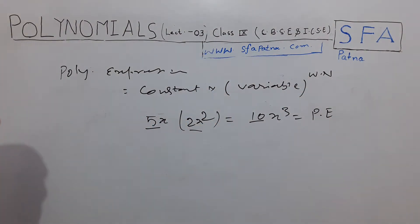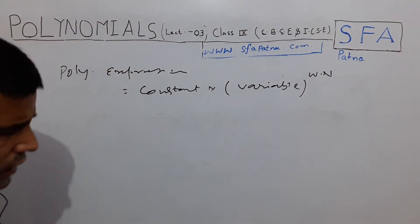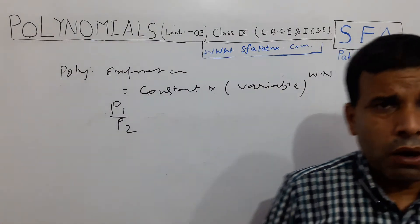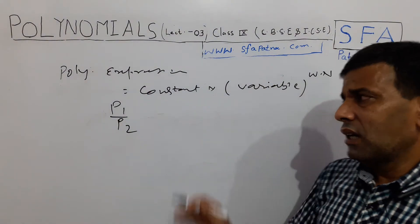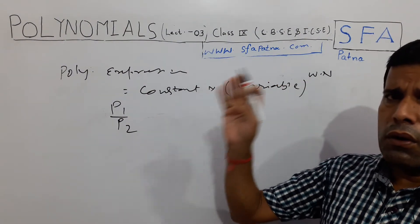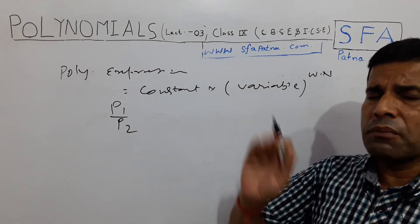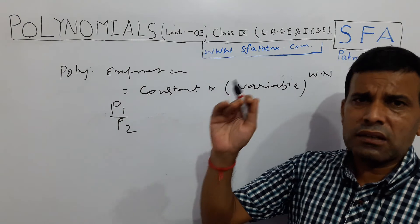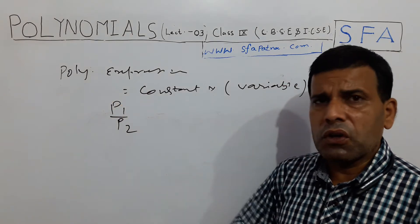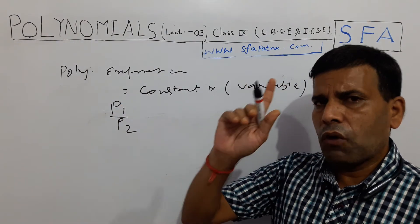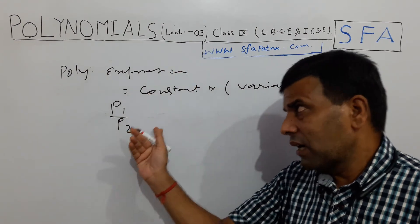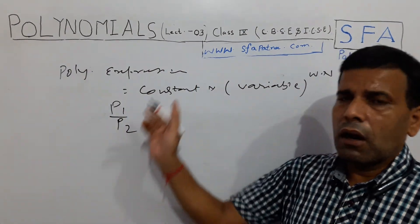Now the last operation is division. If we divide two polynomials, does the result always give a polynomial? It is not necessary. Here some condition is specified. Kindly pay attention — for addition, subtraction, and multiplication, there is no problem. If you perform these operations on two or more polynomial expressions, the result is a polynomial. But in the case of division, we need to be careful.